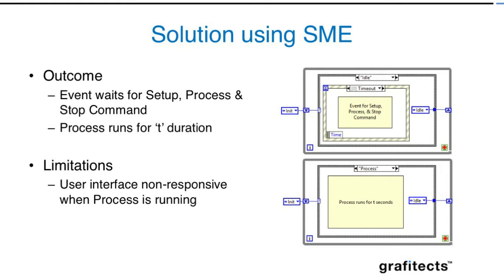The limitation of using state machine events here is that all the controls exist in the idle case, but while the process case is running for T seconds, you will not have access to those controls. When the process finishes and returns, it will immediately read the data, but during processing, the button is inaccessible. For this reason, state machine events are not recommended for this particular requirement — it's going to impact the user experience and is not a good choice.